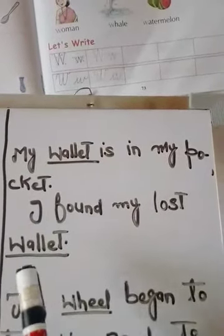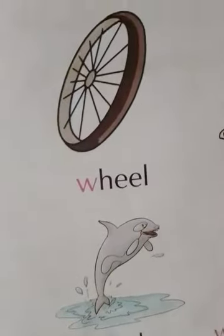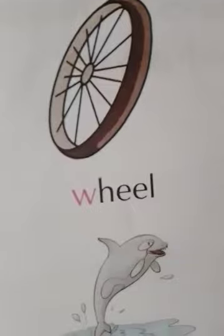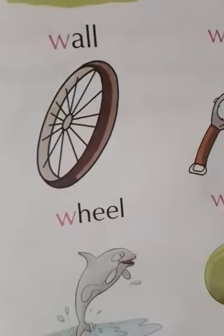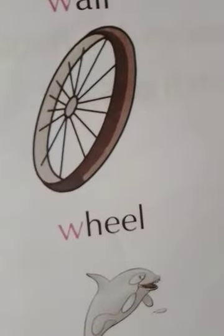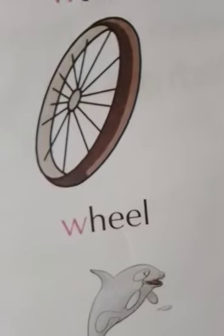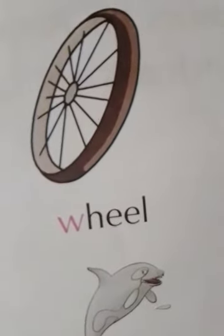W is for wheel. Wheel کیا ہے؟ Wheel ایک circle shaped device ہوتی ہے۔ اور اس کا مقصد کیا ہوتا ہے؟ It allows the things to roll.